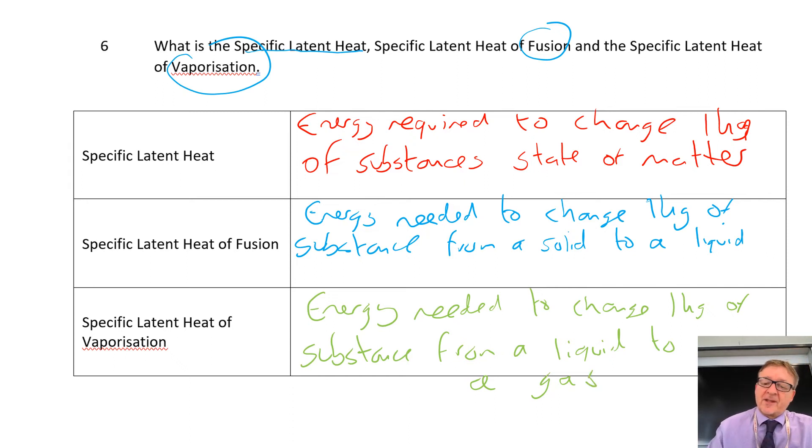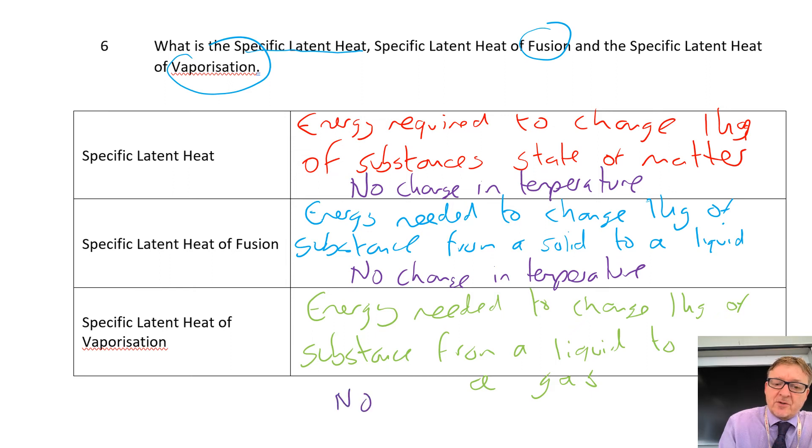Right now there's one thing that I always always always forget I always forget one particular fact with this and the fact that I've forgotten is no change in temperature. So basically what happens is it could change at it can go from a liquid to a gas at 37 degrees C right and when it actually goes from the liquid to the gas there is no change in temperature even though you're still putting energy in so the specific latent heat of fusion you've also got to remember there is no change in temperature. And for specific latent heat of vaporization there is no change in temperature.